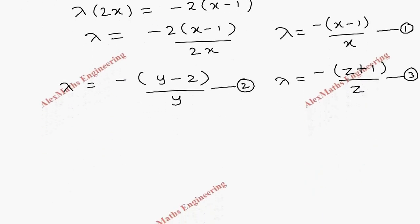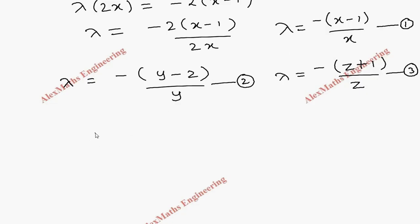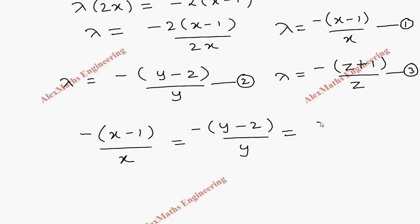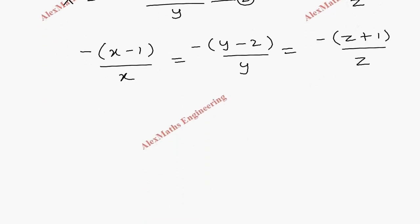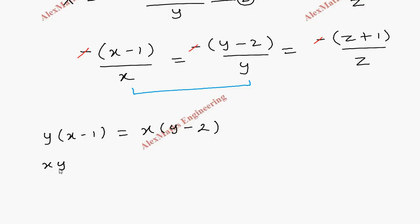Since all three expressions equal λ, we equate them: −(x−1)/x = −(y−2)/y = −(z+1)/z. Canceling the minus signs and cross-multiplying the first two parts: y(x−1) = x(y−2), giving xy − y = xy − 2x. Canceling xy, we get y = 2x.